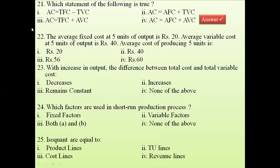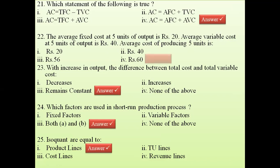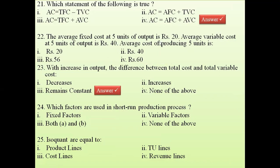Question 22: the average fixed cost at 5 units of output is rupees 20, and the average variable cost at 5 units of output is rupees 40. What is the average cost of producing 5 units? Since average cost equals AFC plus AVC, the answer is rupees 60.